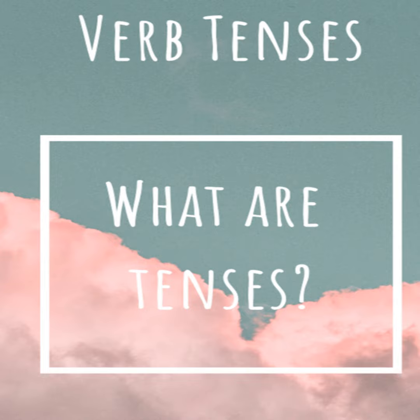The Past Continuous Tense. Form: was/were plus a present participle. Uses: To express a past action which was happening when another action was completed. E.g., I saw him when I was walking home. She lost the keys when she was playing handball. To express two past actions which happened at the same time and were both continuous: I was singing while they were dancing. To show what was happening at a past time: At 10 o'clock last night, I was watching television.